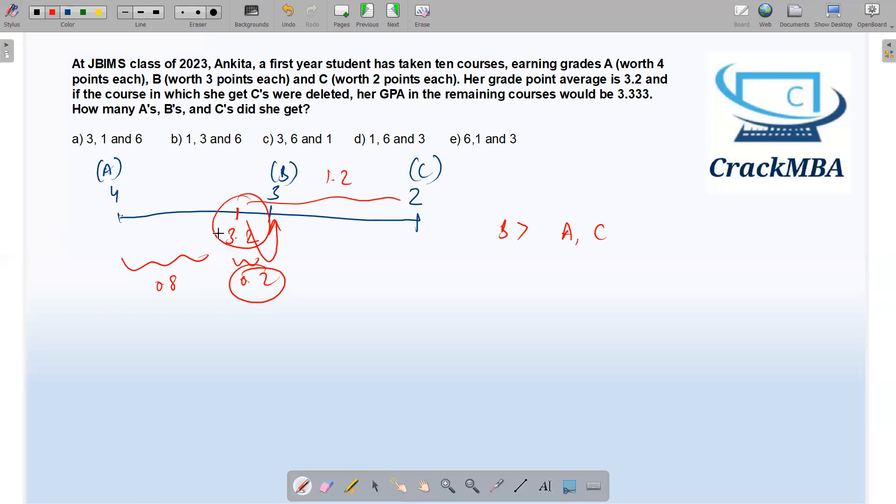Now let's eliminate the options. 3, 1, 6—not possible because B has to be more than the other two. Eliminated. This is possible. This is possible. This is also eliminated. So as you can see, within 10 seconds I can eliminate three options and I'm left with two options only. And the next five seconds will help you eliminate the other one option and you'll get the answer.